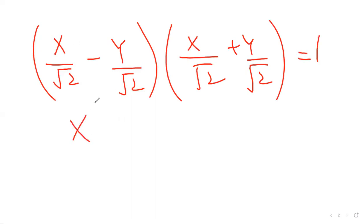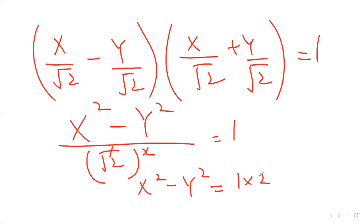The equation will become x squared minus y squared, difference of two squares. Root 2 is in the denominator, and root 2 squared will become 2. The final answer: x squared minus y squared equals 2.